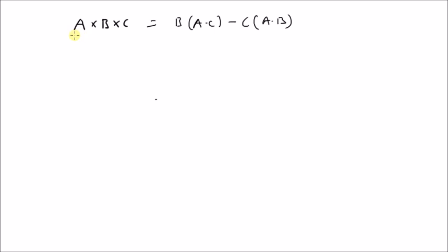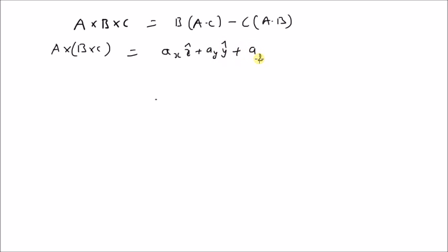So now we want to prove this rule. Let us start with the left hand side, that is a cross (b cross c), which is equal to by definition ax times x-hat plus ay times y-hat plus az times z-hat, cross product with the vector b cross c, which is again a cross product between b and c.